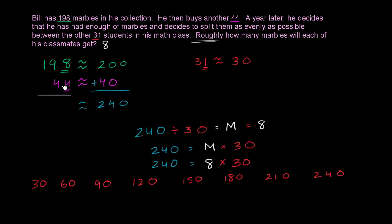8 plus 4 is 12. And then 1 plus 9 plus 4 is 14. 1 plus 1 is 2. So the exact number of marbles he had was 242, which is pretty close to 240. So 240 was a good approximation. And then when you divide that by, dividing it by 31 is a bit of a pain. And luckily we can just estimate. So we divided by 30 and we got 8.